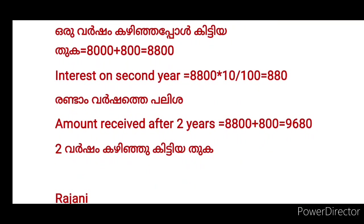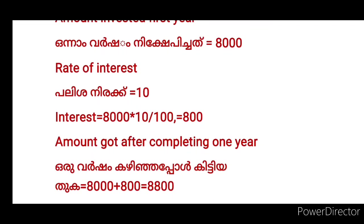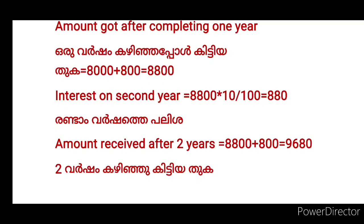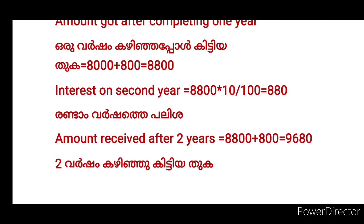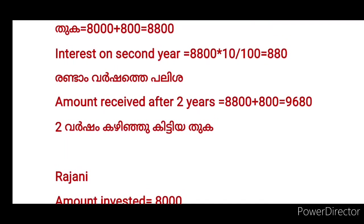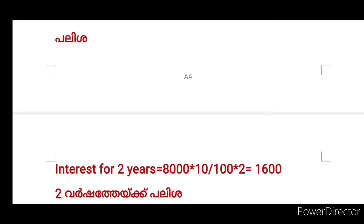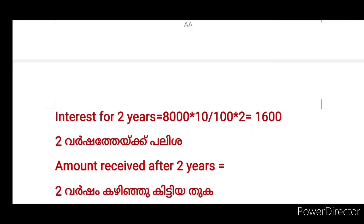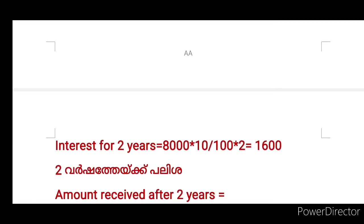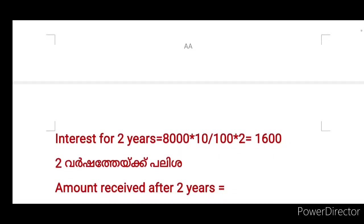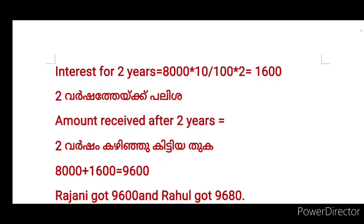So the amount he got after completing one year will be equal to $8,000 plus $800. So the second year is $8,800 into 10 by 100. The amount received after two years is $8,800 plus $880 equals $9,680. The amount invested in the first year is $8,000 and the interest rate is 10%. The interest rate is $8,000 into 10 by 100 into 2.